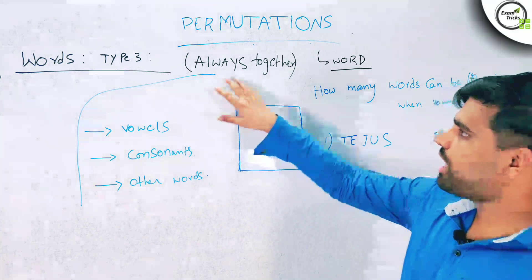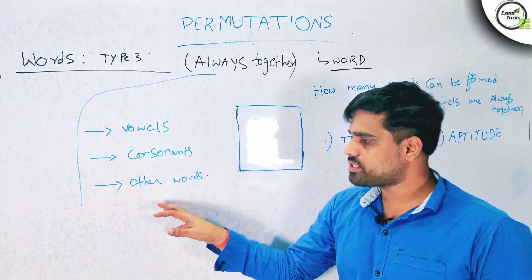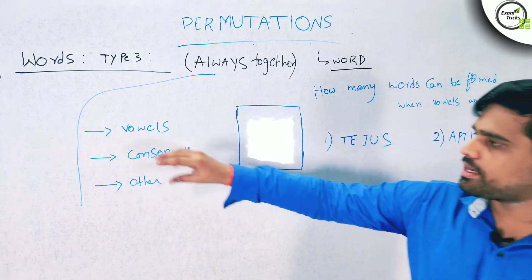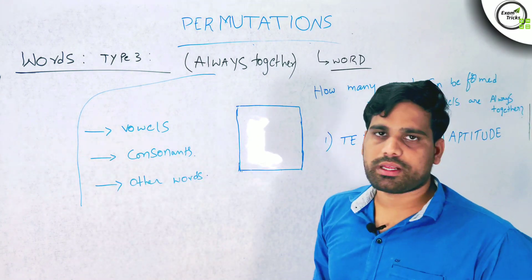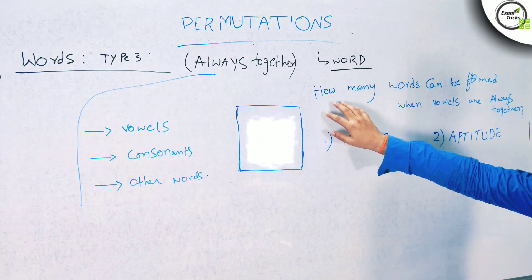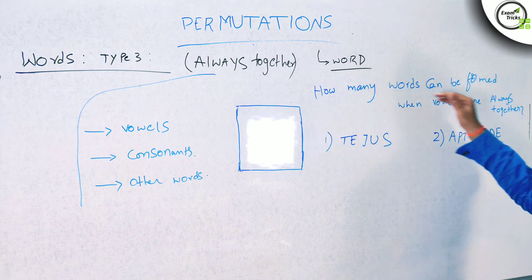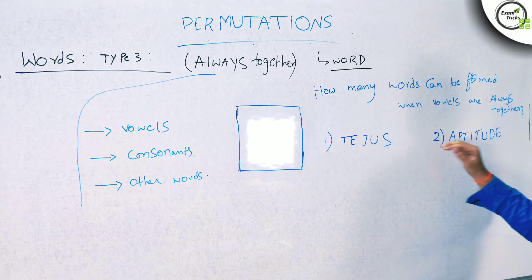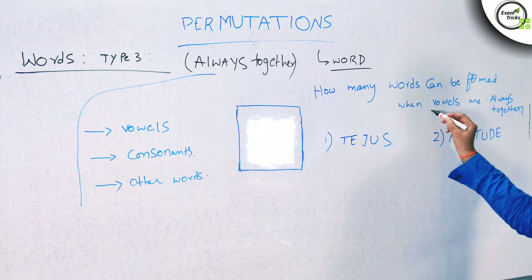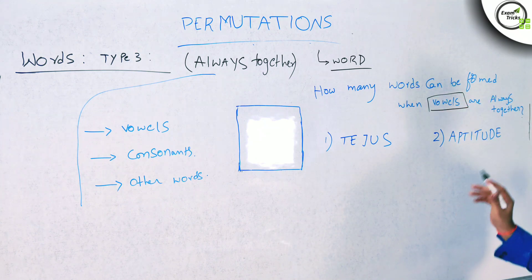In this video, we will cover always together. We will cover 3 parts. How many words can be formed when the vowels are always together?